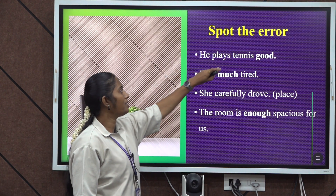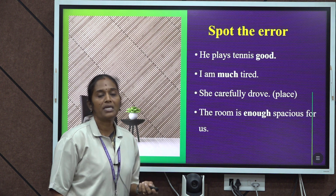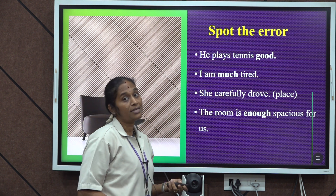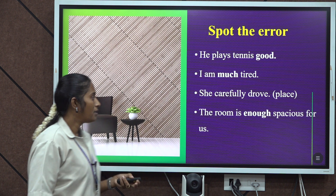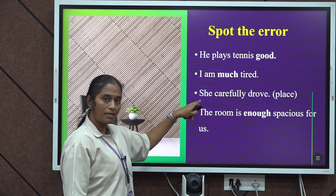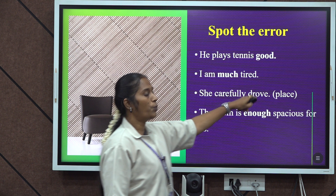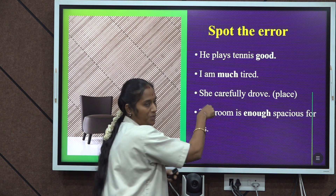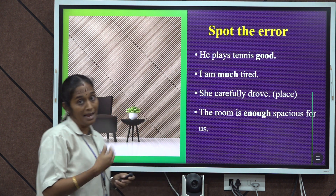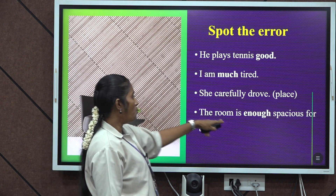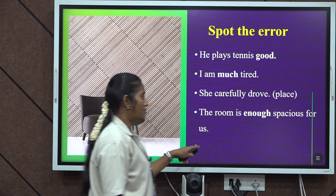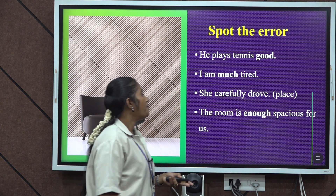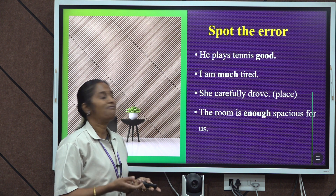Look at the next slide. 'He plays tennis good' — we should not use 'good' here; we are supposed to use 'well.' Next: 'I am much tired' — instead, say 'I am so tired' or 'very tired'; both are correct. 'She carefully drove' is an error — the adverb should go at the end: 'She drove carefully.' Also, 'The room is enough spacious for us' should be 'The room is spacious enough for us.'